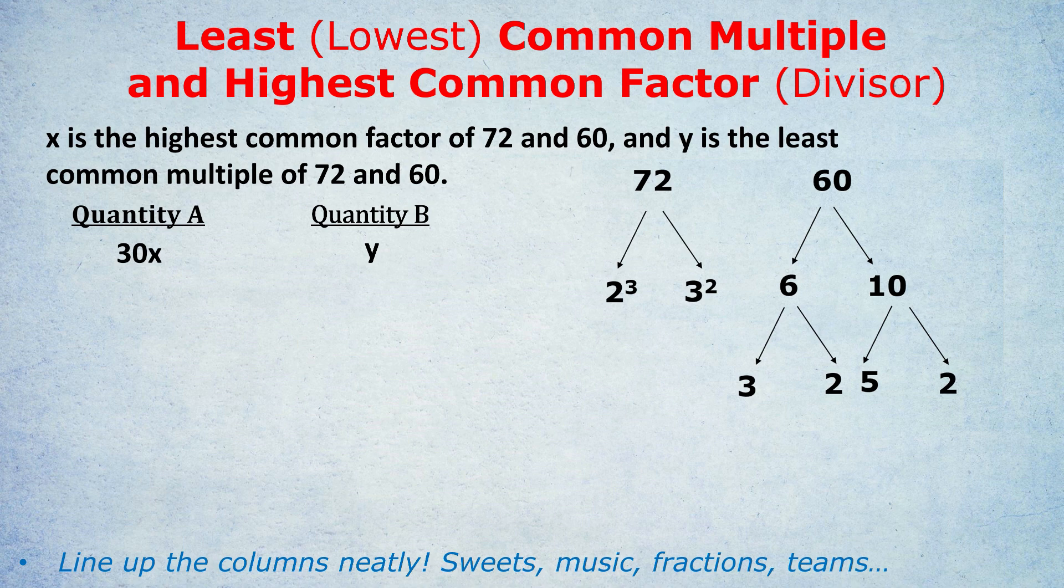72, once you get more used to this method, you can skip straight to the answer. You know that 72 is 8 times 9, and you know 8 is 2 cubed, it's got three 2s, while you would know that 9 is just 3 squared, it's got two 3s. So that's the kind of shortcut you can do once you're more familiar with the numbers. Either way, here comes the most crucial step of all. It's all in the layout.